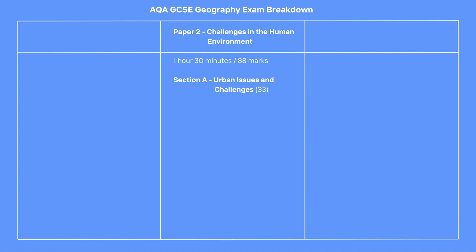Section A is Urban Issues and Challenges. You answer all questions in this section. 33 marks are available, including 3 for spelling, punctuation and grammar on a 9-mark question.